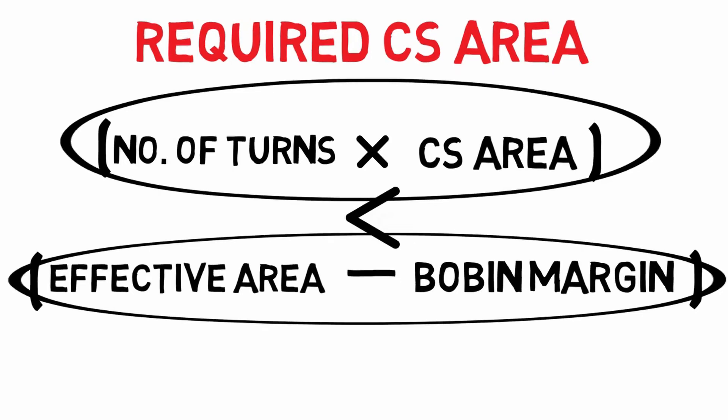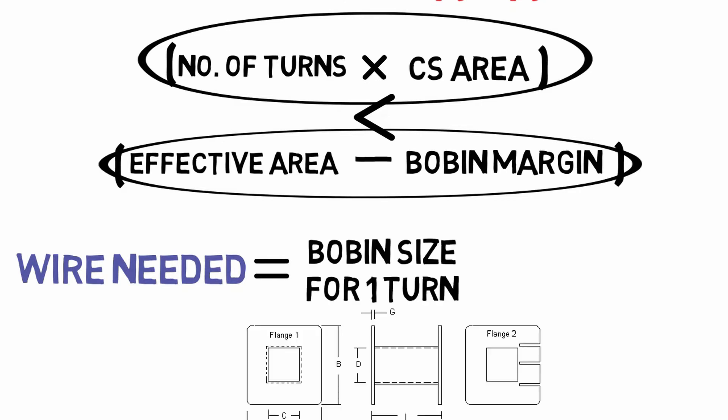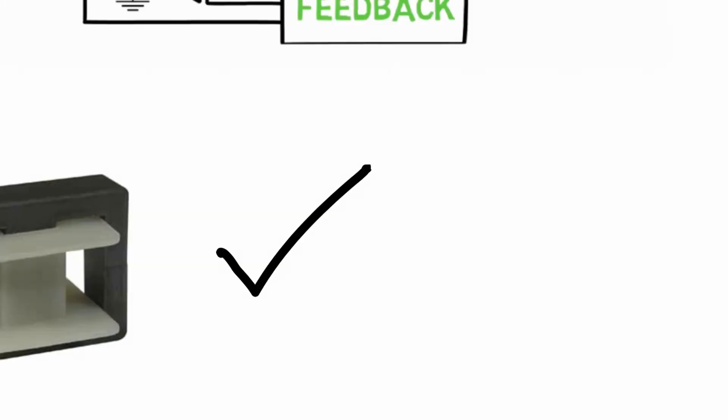After that we have to find out the length of wire to be needed for winding. It is dependent on the bobbin size for one turn into number of needed turns. After finding all these values we can wind the wire around the core.